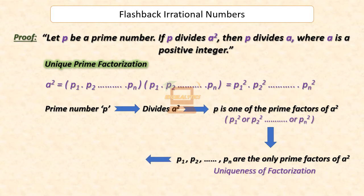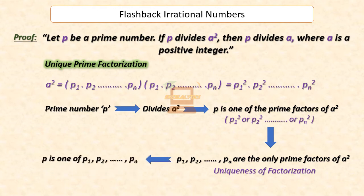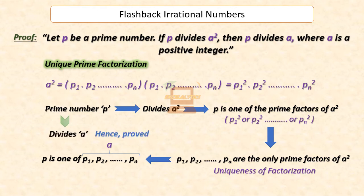So, P is one of P1, P2 and so on till Pn. Now, since A equals P1 × P2 × ... × Pn, P divides A. Hence, proved.